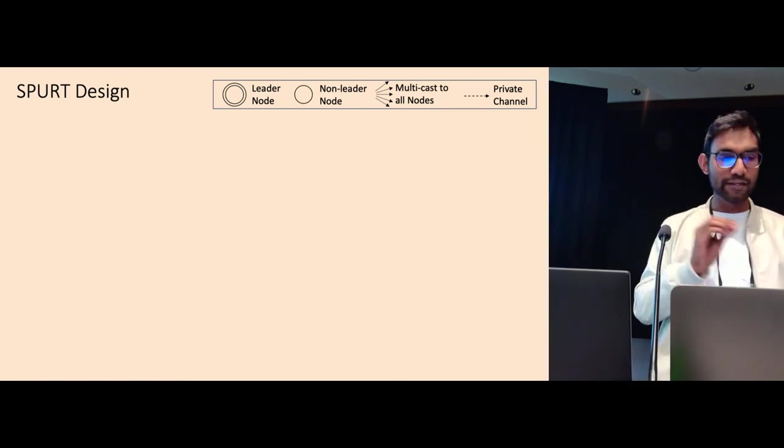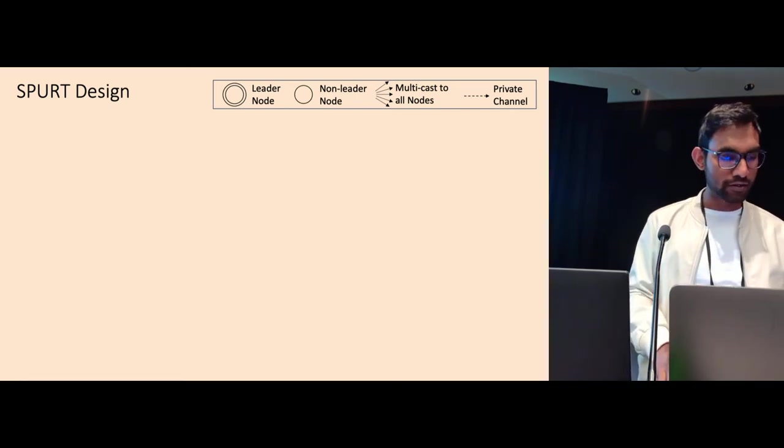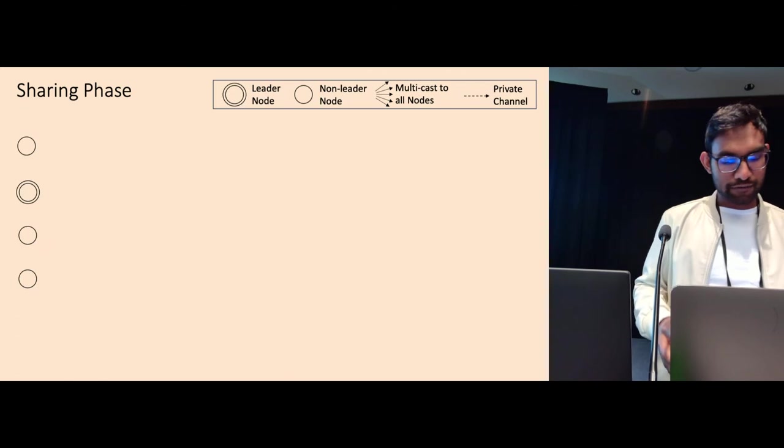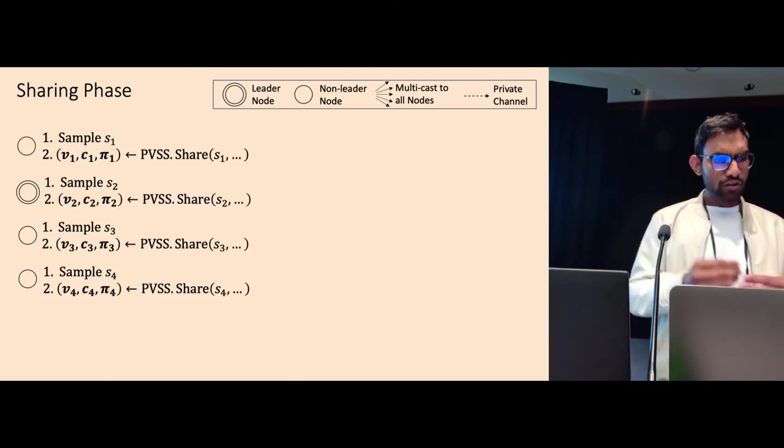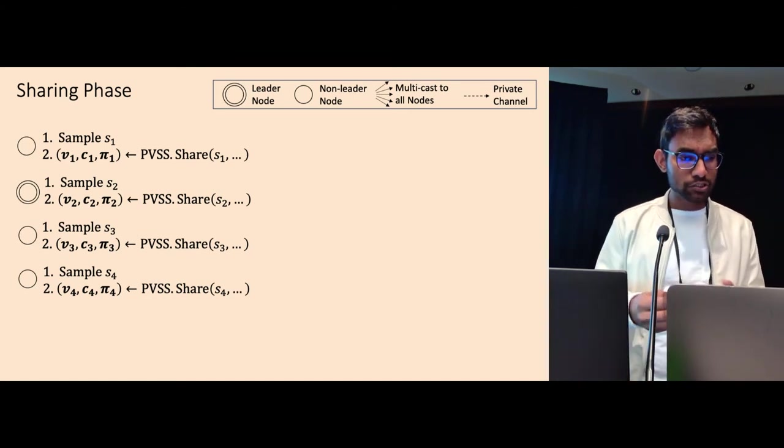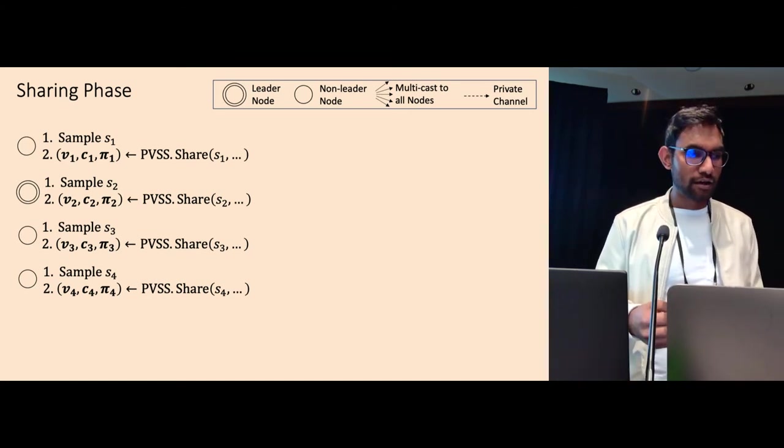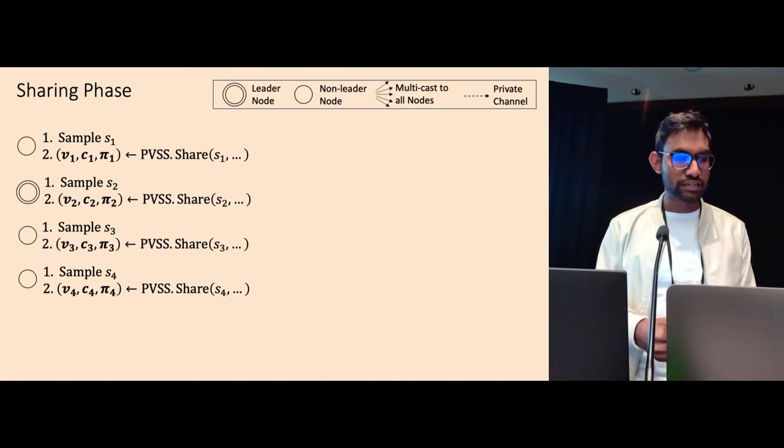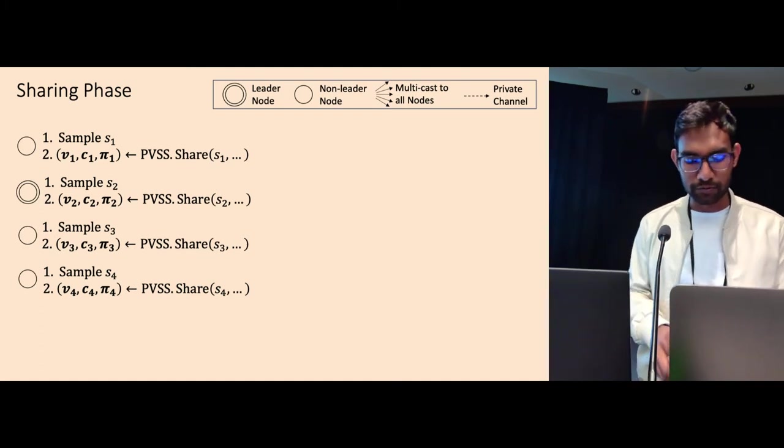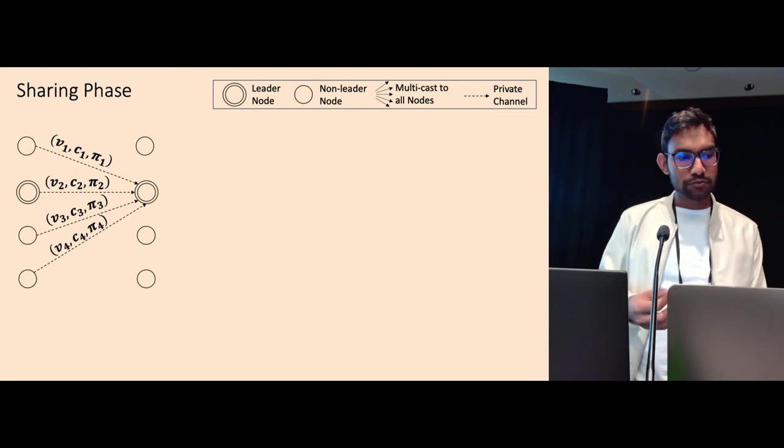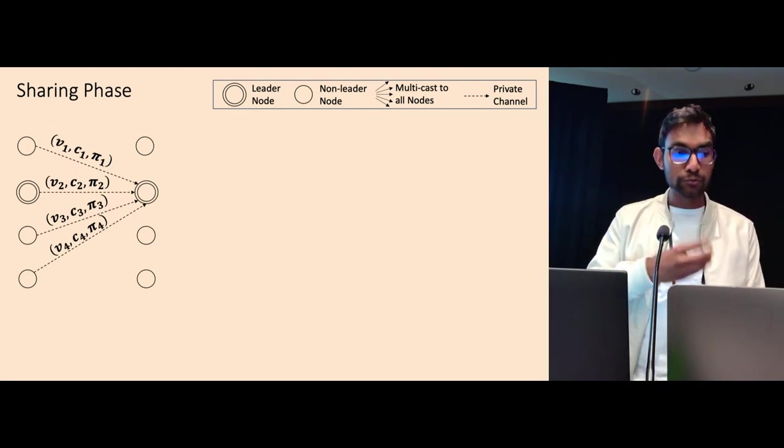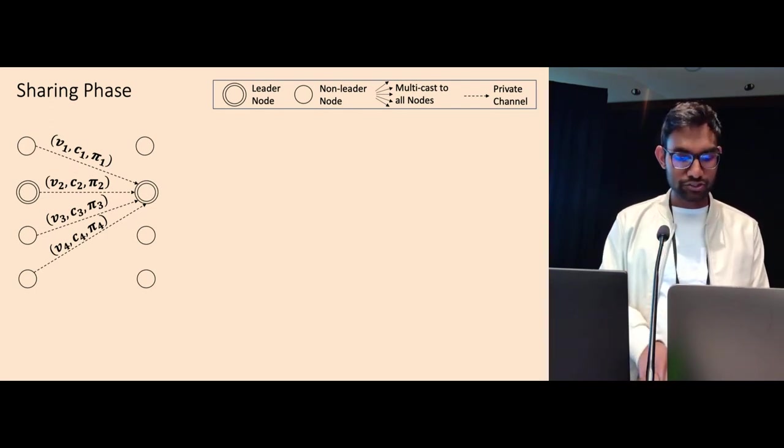On top, I have the legends that I'll be using for my figures. In the sharing phase, let's say we have four nodes, and the second node is the leader. What each node does, each node samples a random secret and computes the PVSS transcript of the random secret sampled by the node. Every node does this locally. And then these nodes will send this PVSS transcript to the leader. This is the sharing phase.